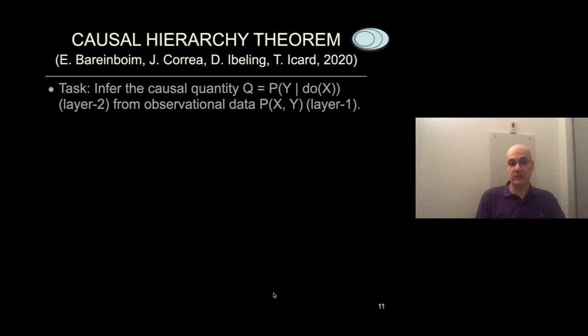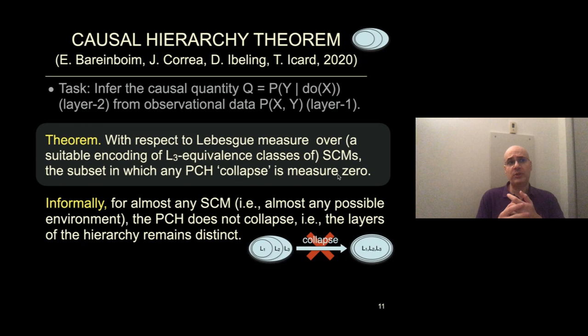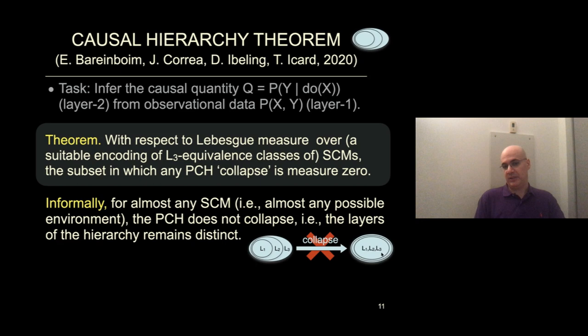I would like to generalize this — this is joint work with Correa, Ibelin, and Eckhart, from the paper mentioned earlier. Theorem: with respect to a natural measure over SCMs, the subset in which any PCH collapses is measure zero. Informally, for almost any SCM — almost any possible environment in which your agent or system is embedded — the PCH doesn't collapse. The layers of the hierarchy remain distinct. There is more knowledge in layer two than in layer one alone, and more knowledge in layer three than in layers one and two combined. One layer under-determines the others.